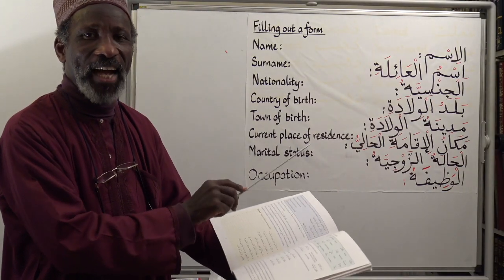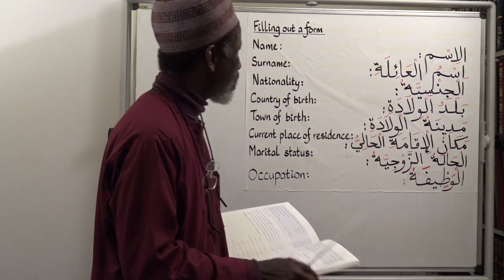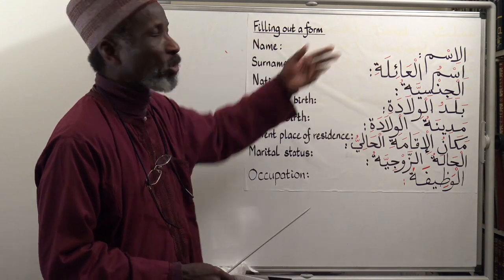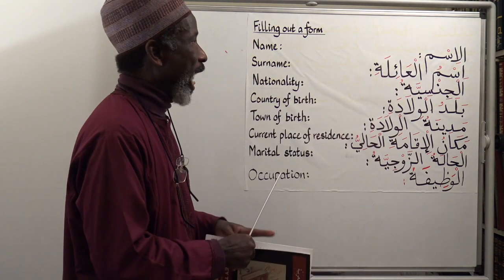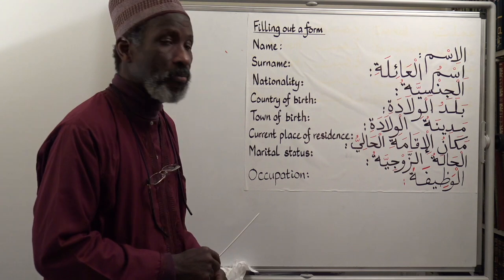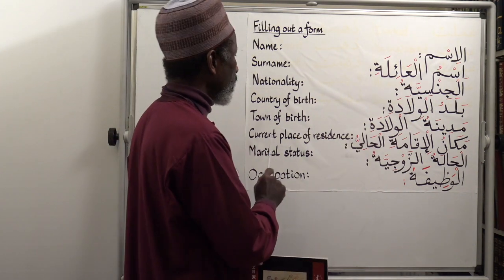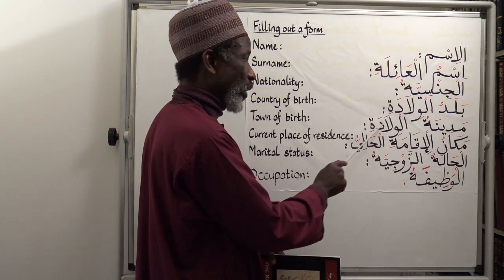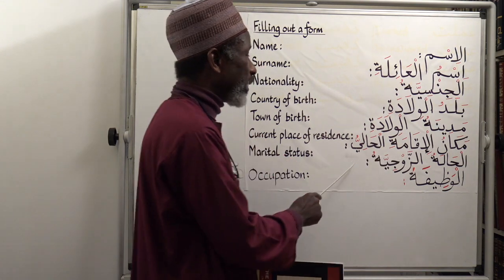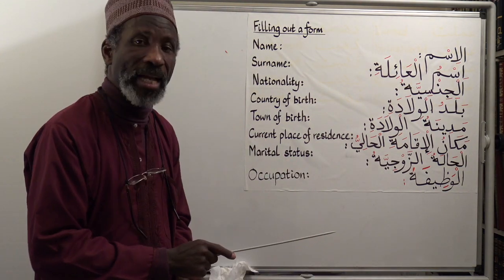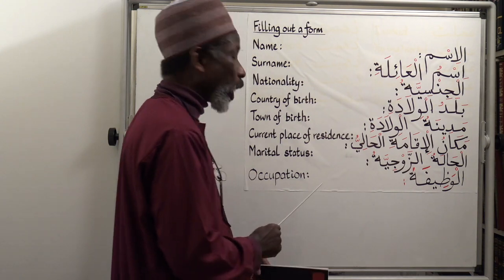This is your last item on this topic of idhafa construction or genitive of possession. Here, just to give you a clue of filling out a form — a usual question. Al-isim: name. Ismu al-a'ilati: surname. Al-jinsiyya: nationality. Balad al-wiladati: country of birth. Madinat al-wilada: town or city of birth. Makaanu al-iqamati al-haliyyu: the current place of residence. Al-halatu al-zawjiya: marital status. Al-wazifatu: occupation.